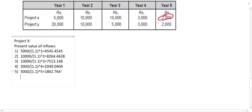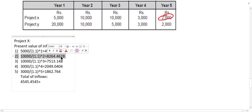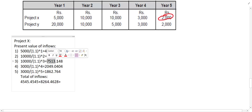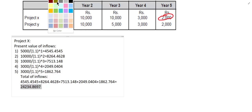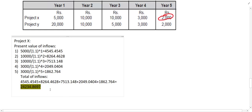Now the inflows for Year 1 through Year 5 are all found. Let us find the total present value of inflows for Project X. Take the sum of all five year values — Year 1 plus Year 2 plus Year 3 plus Year 4 plus Year 5. Press equal and you get the total inflow for the project, which comes to approximately 24,232.